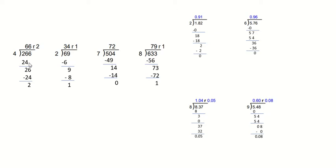6 times 4 is 24. You write your 24 there and subtract. In division, all you do is subtract — you do not add. So 6 times 4 is 24, and 26 minus 24 is 2. We write our 2 there, bring our 6 down, and see how many times 4 goes into 26 — that's 6 again. 6 times 4 is 24, subtract, and 26 minus 24 gives us a remainder of 2. So 266 divided by 4 is 66 with a remainder of 2.